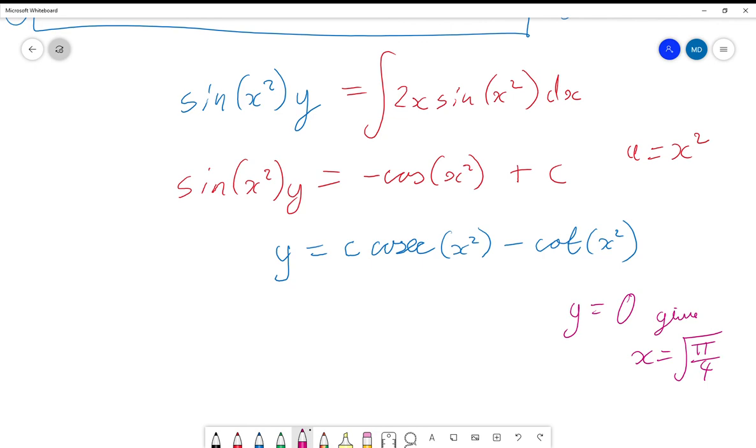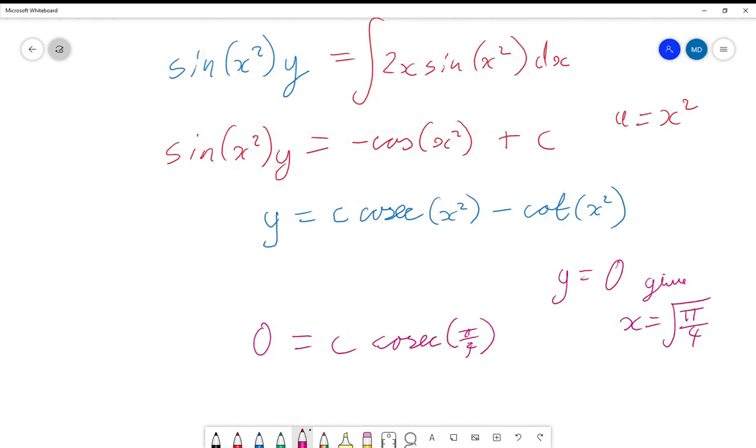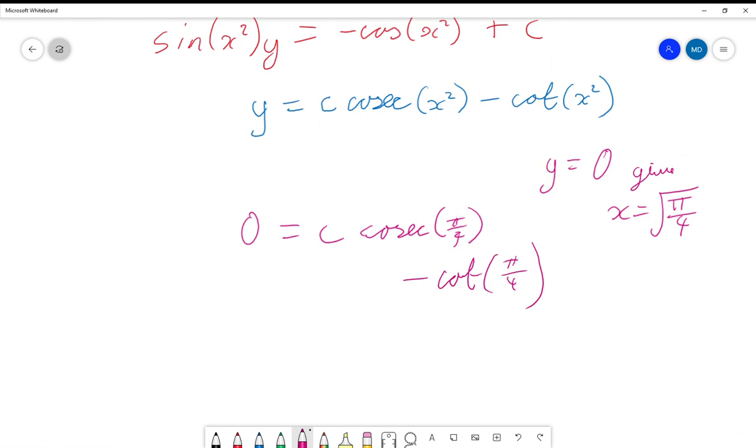I'm going to plug this in and so we get 0 = C·cosec(π/4) - cot(π/4), because obviously if I square a square root I'm going to end up with just everything inside the square root. And these are both values which are relatively easy, put them in a calculator, whatever you want, so we get 0 = √2·C - 1 and rearranging that we get C = 1/√2, and so our particular solution